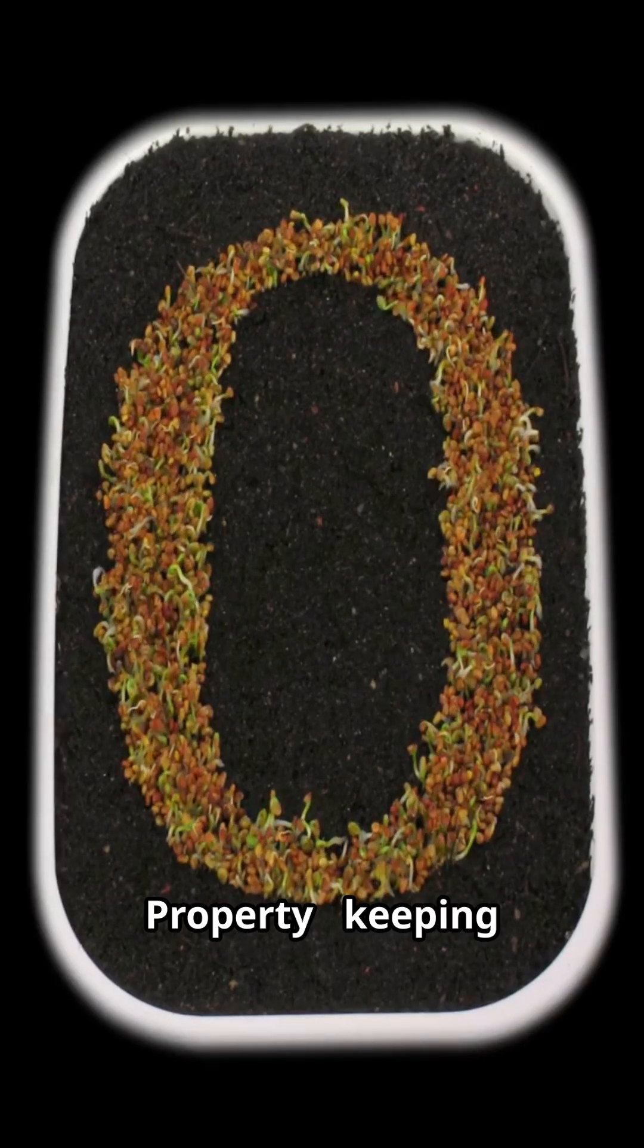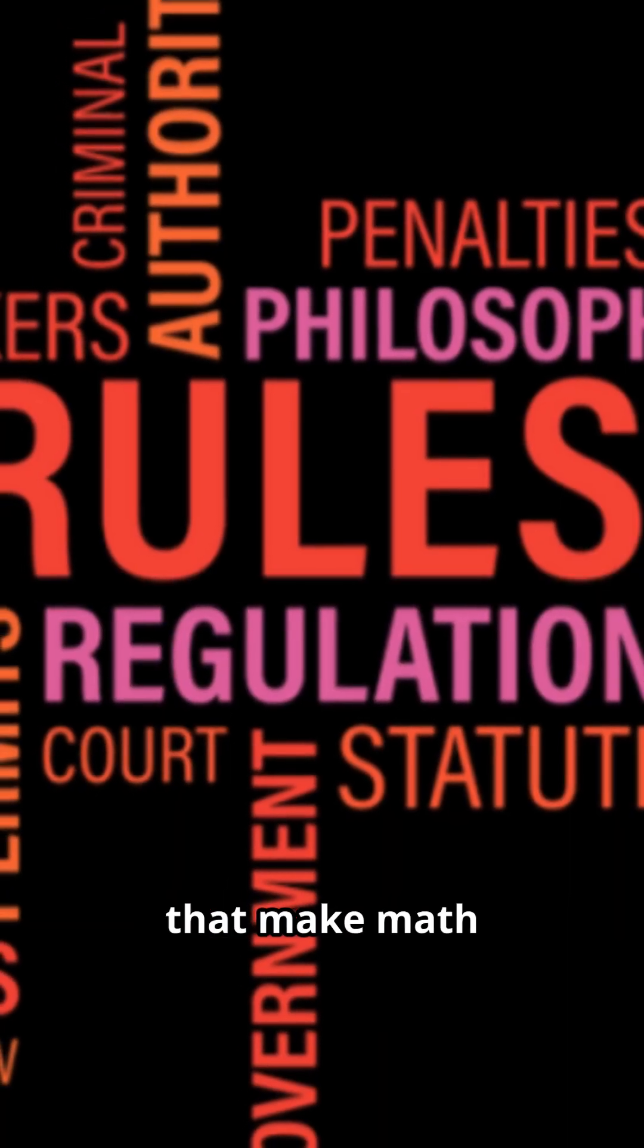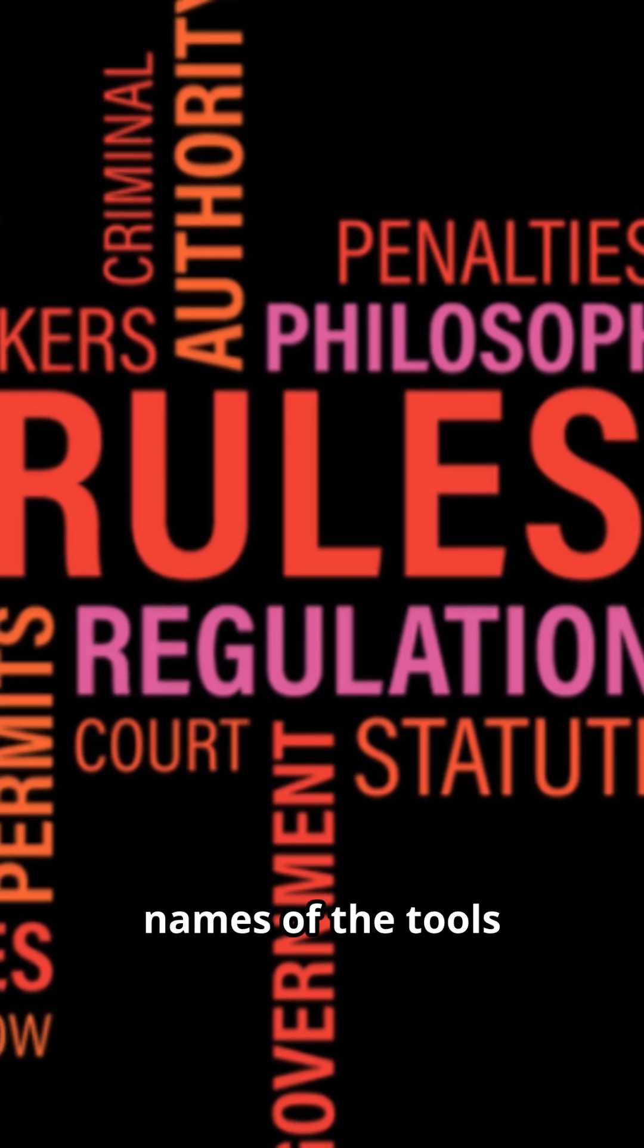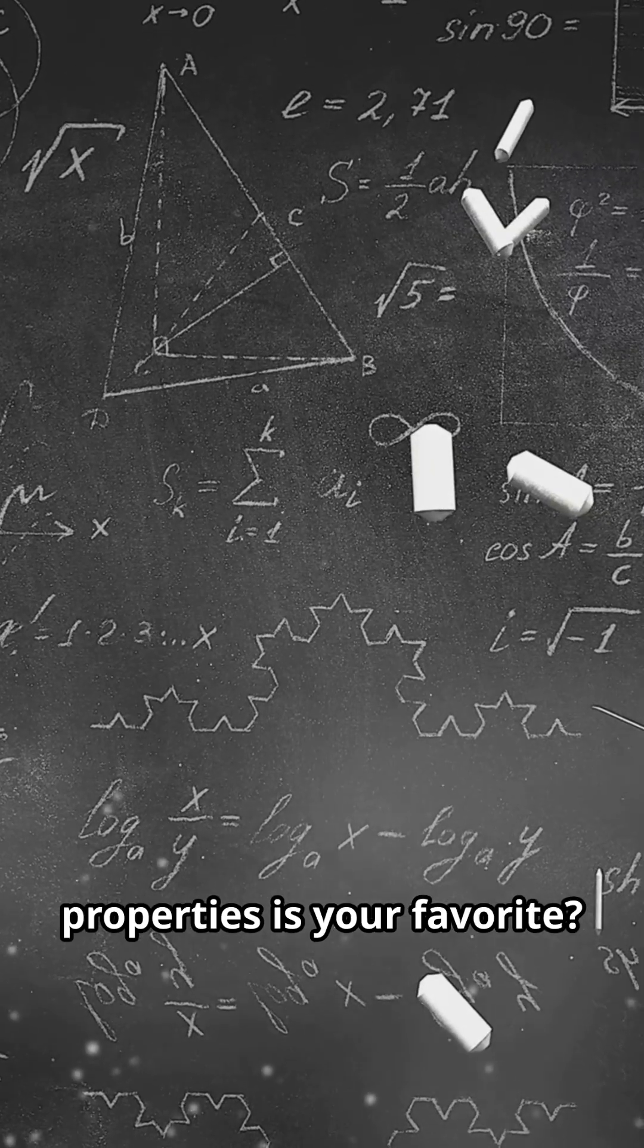The identity property. Keeping numbers true to themselves. These are the rules that make math consistent and predictable. Now you know the names of the tools you've been using your whole life. Which of these properties is your favorite?